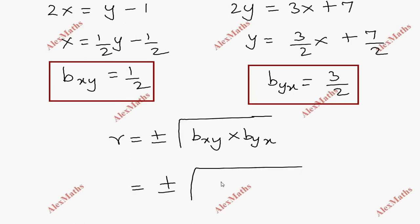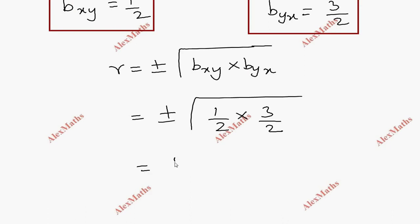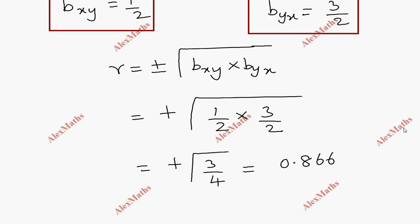The correlation coefficient r = ±√(bxy × byx) = ±√(2/3 × 1/2) — wait, that is ±√(3/4). So r = ±√(3/4) = ±0.866.